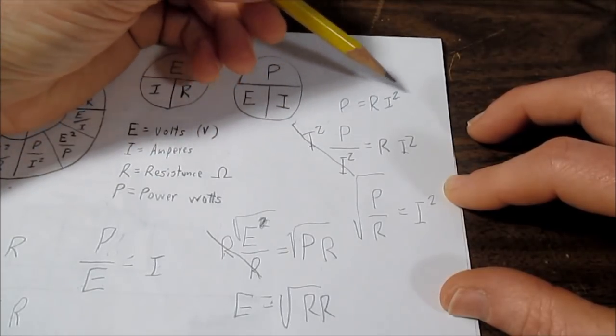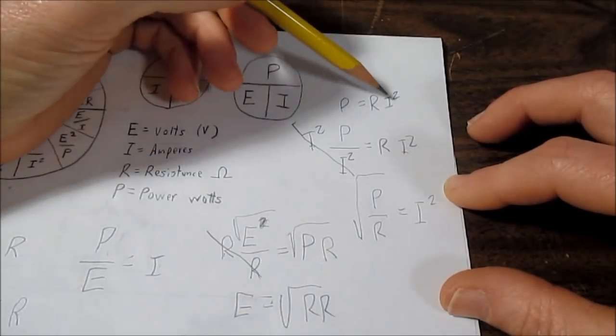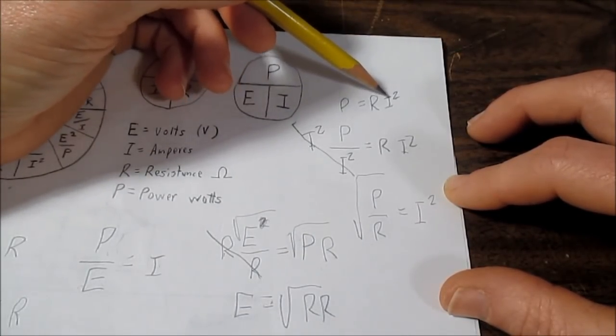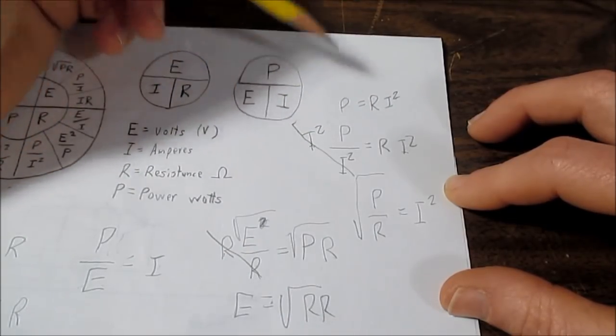That's easy to remember because I always remember I squared R losses in cables. Because you're multiplying the current squared times the resistance to give you the loss in those cables.